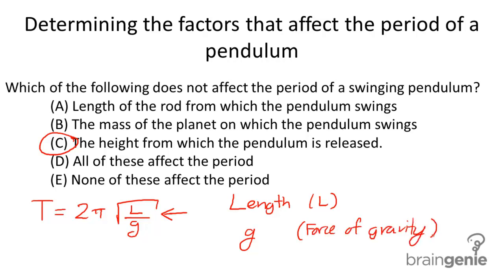Now I want to comment on answer choice B, the mass of the planet on which the pendulum swings. This would change the force of gravity, because if you remember the force of gravity equation, it's G m1 m2 divided by r squared, and one of these masses would be the mass of the planet that the pendulum is swinging on.